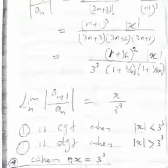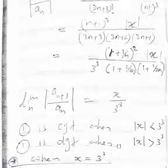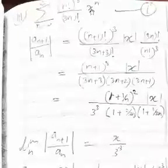We don't yet know what happens at the boundaries. The boundaries are ±27, that is ±3³. So let's consider each boundary one by one. First consider x = 3³ = 27.